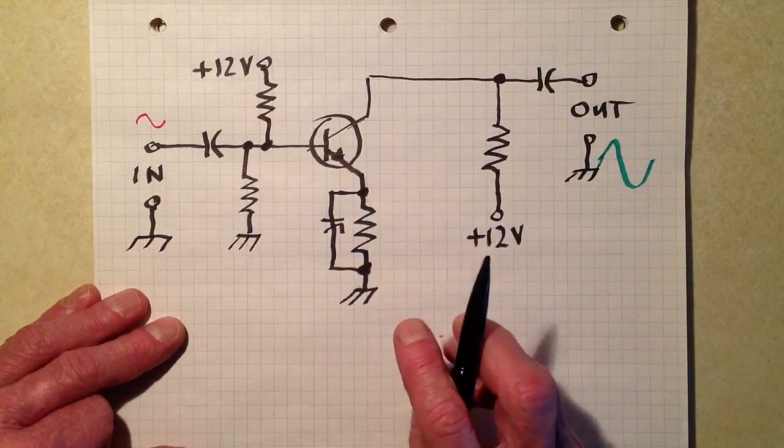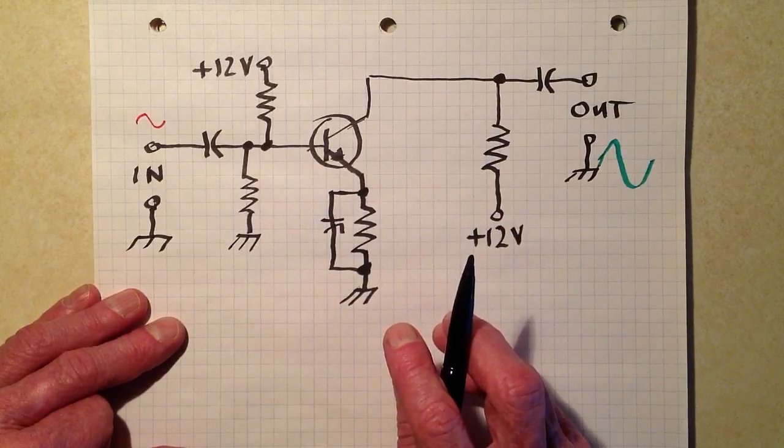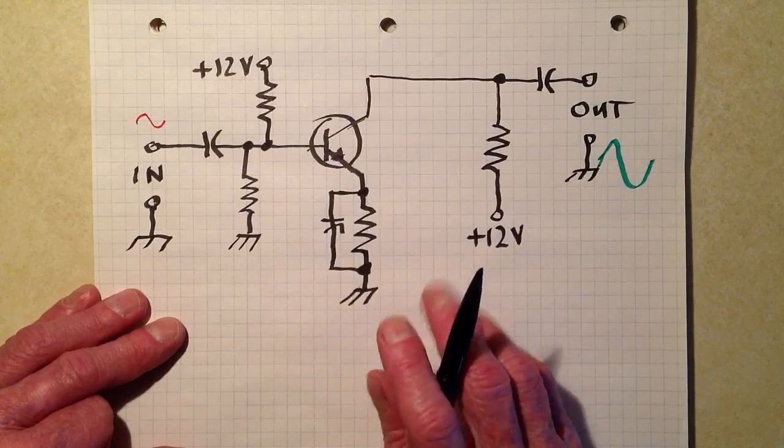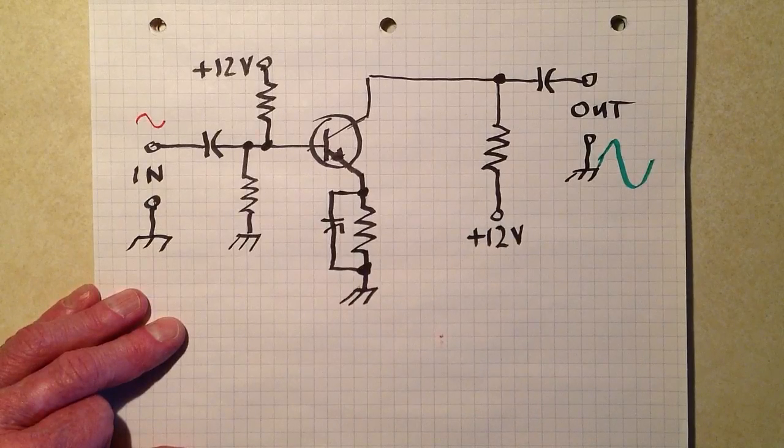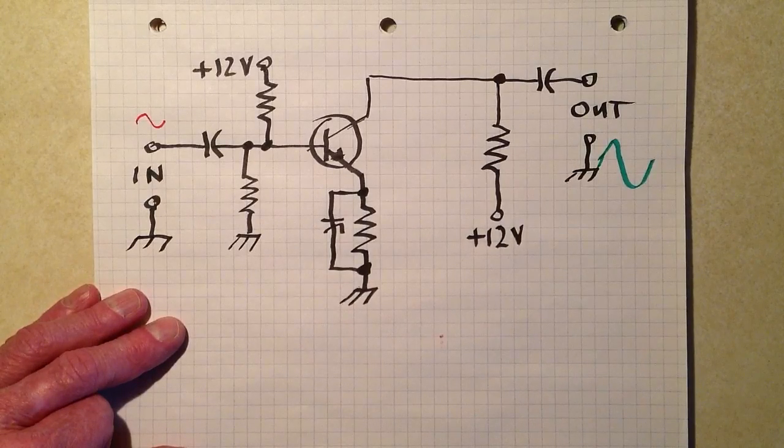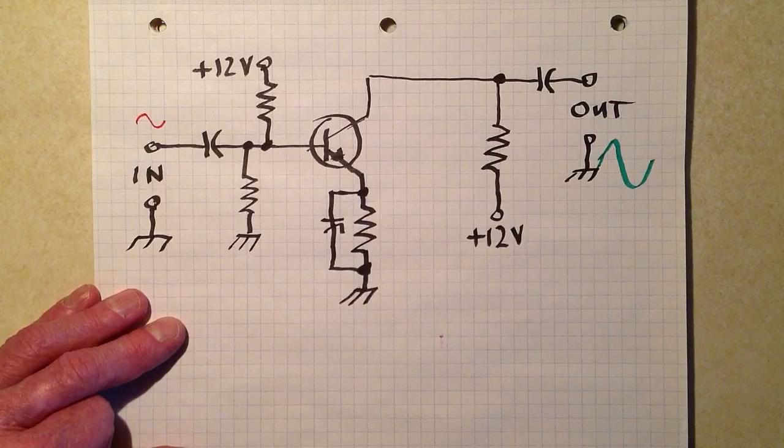Now the diagram in the book shows some test points, TP1, TP2, and TP3. I'm not going to include those here because they would simply clutter things up. Basically then, what we have here is the complete amplifier circuit.